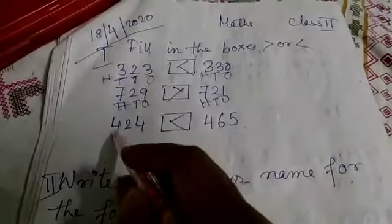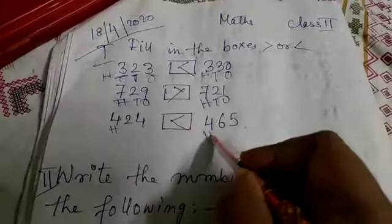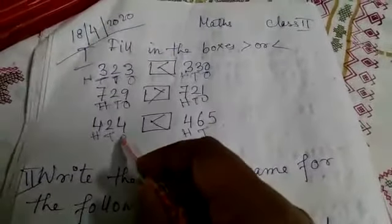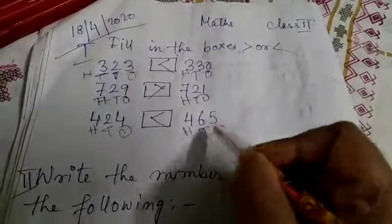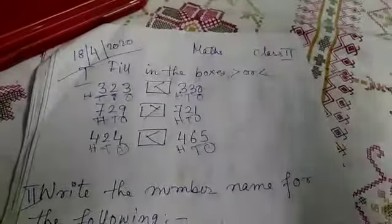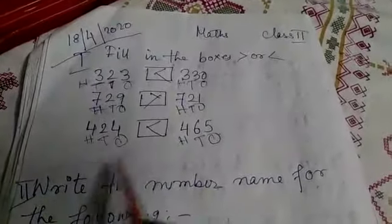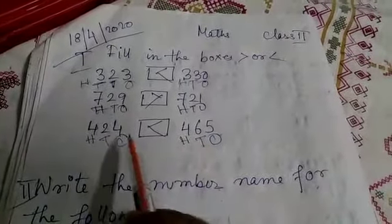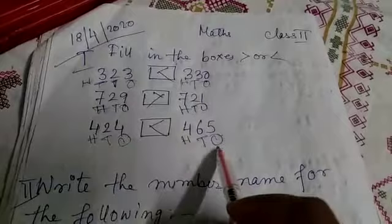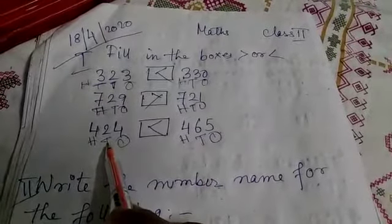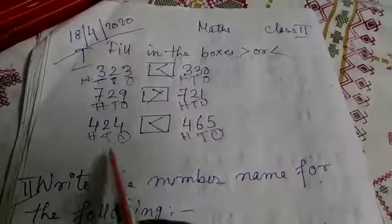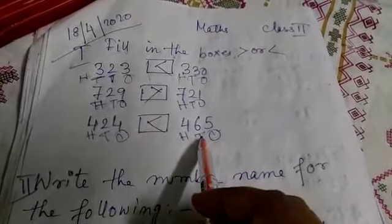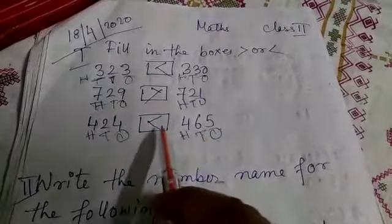Here, we will see hundreds place. Hundreds place is 4. Tens place, here is 2, here is 6. Ones place is 4 and here is 5. So, hundreds place both are 4, same. Then we will come to tens place. Here is 2, here is 6. Which is greater? This one is greater. Therefore, this side.